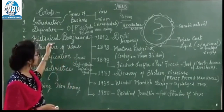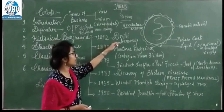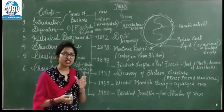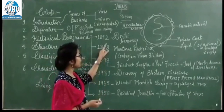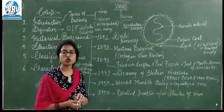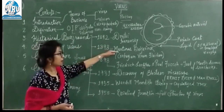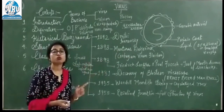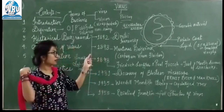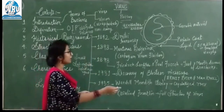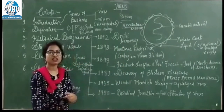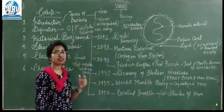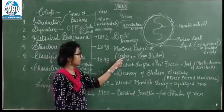Ab viruses का historical background देखते हैं. सबसे पहले Dmitri Ivanovsky ने tobacco plant में एक non-bacterial agent देखा जो disease cause कर रहा था. In the year 1898, Martinus Beijerinck ने tobacco mosaic virus की खोज की. उन्होंने उसका नाम दिया 'Contagium Vivum Fluidum' — उन्हें लगता था कि virus liquid state में रहता है.